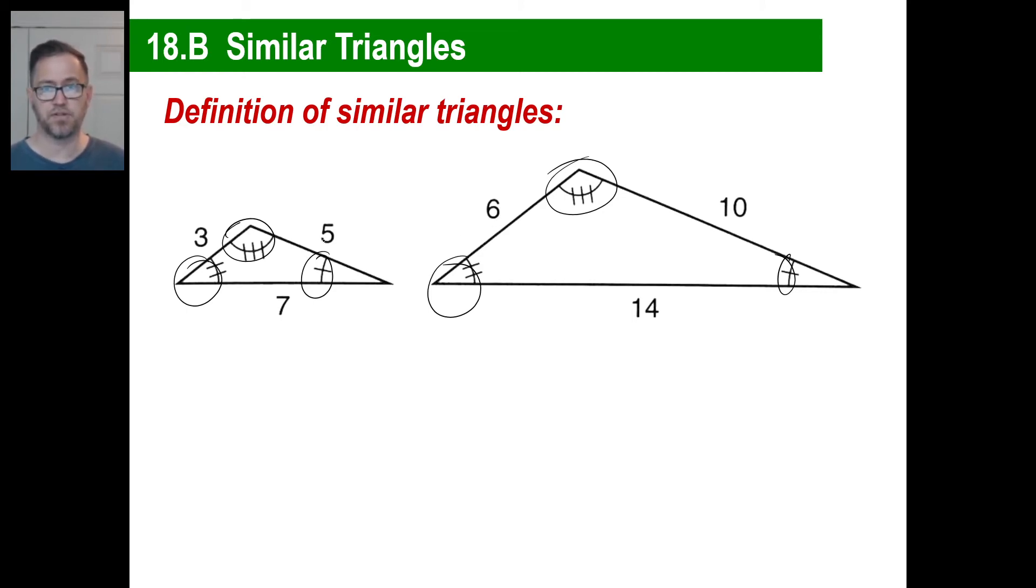But here is what happens with similar triangles because the angles being the same. What happens is look at the side ratios. Look at the three and then look at the six. Okay. Then the five and the 10, then the seven and the 14. Obviously what's happening, it's double, right? There is a nice exact ratio. So in other words, you could look at this anytime you see two similar triangles and you can make ratios if you want to out of the sides.